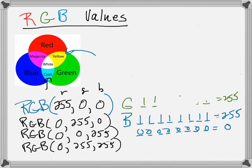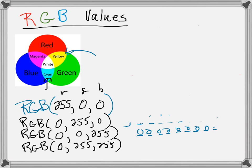By the way, what would RGB(255, 255, 255) mean? If all three primary colors are turned on, that would actually be white — we'd get the white color with 255, 255, 255.